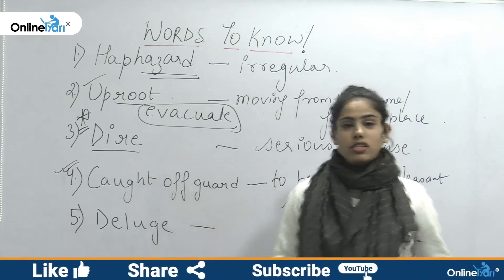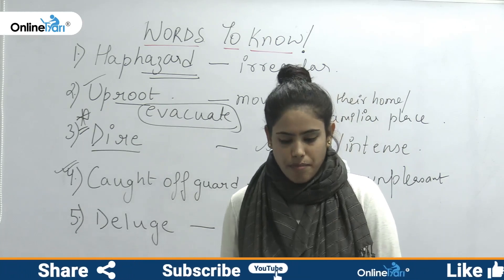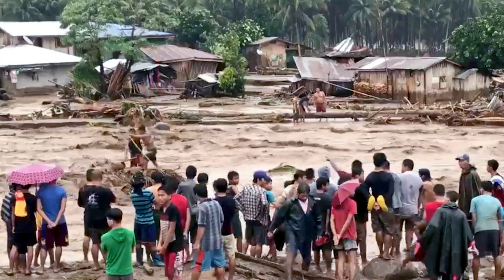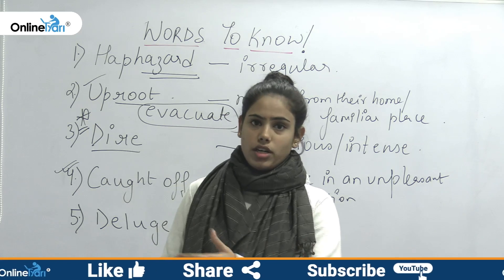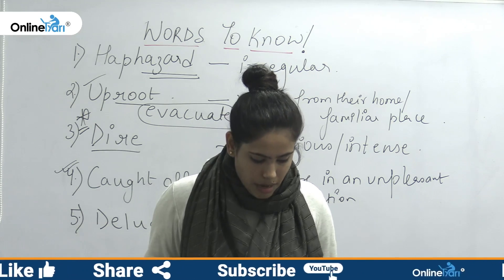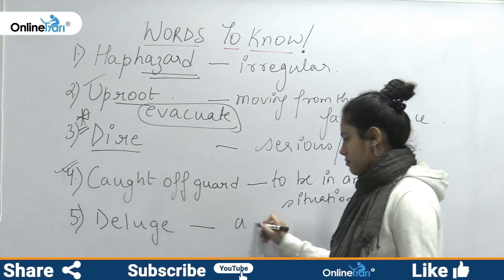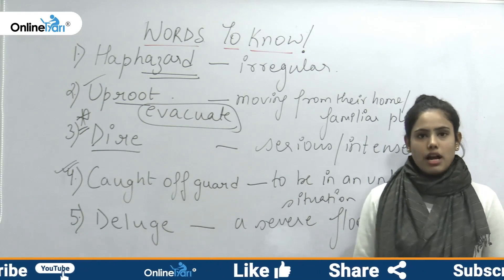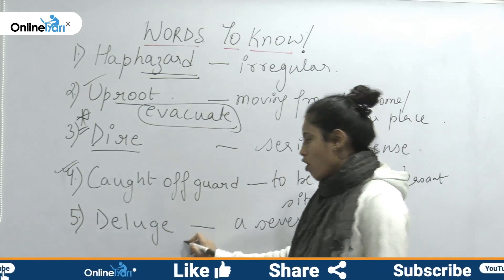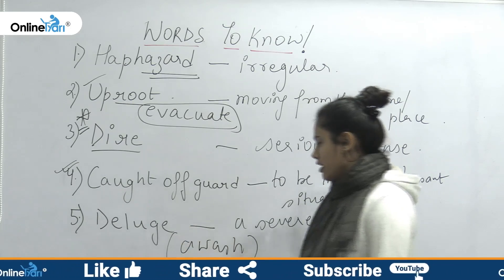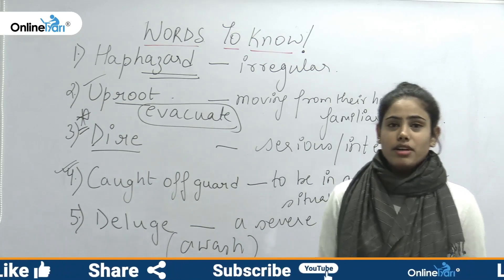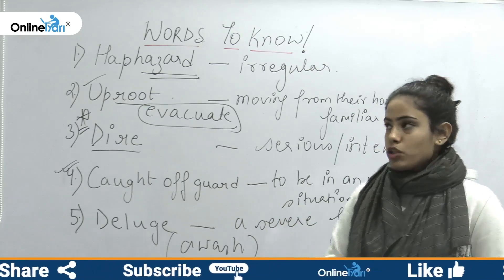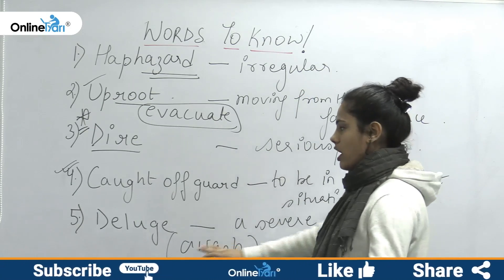Fifth word — deluged. You can see the image. Deluged means covered with flooded water. So deluged is nothing but a severe flood — a severe flood. Deluged is a severe flood, which you also call 'awash,' meaning covered with flooded water.